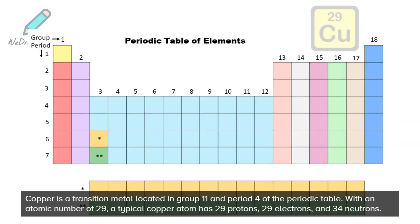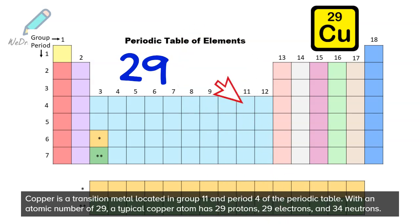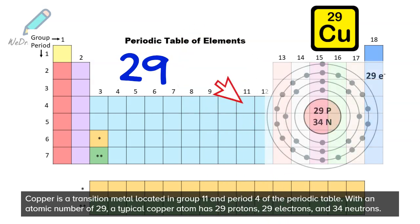Copper is a transition metal located in group 11 and period 4 of the periodic table. With an atomic number of 29, a typical copper atom has 29 protons, 29 electrons, and 34 neutrons.